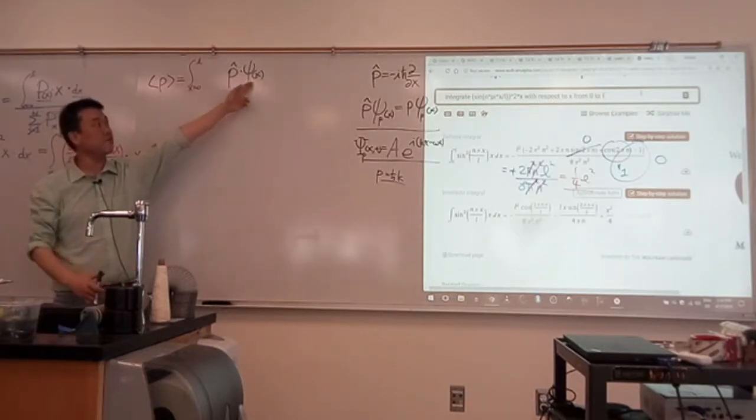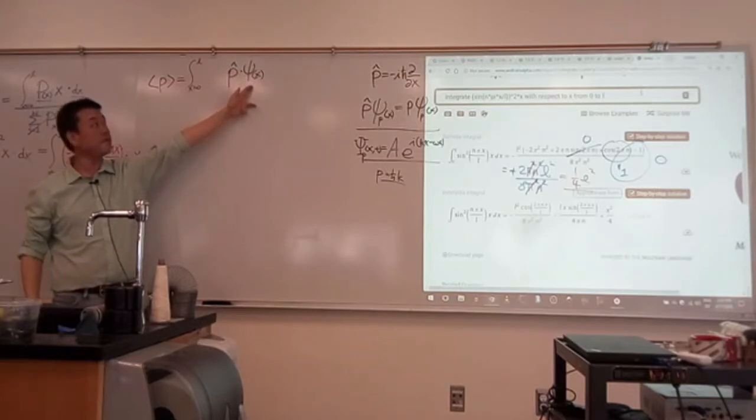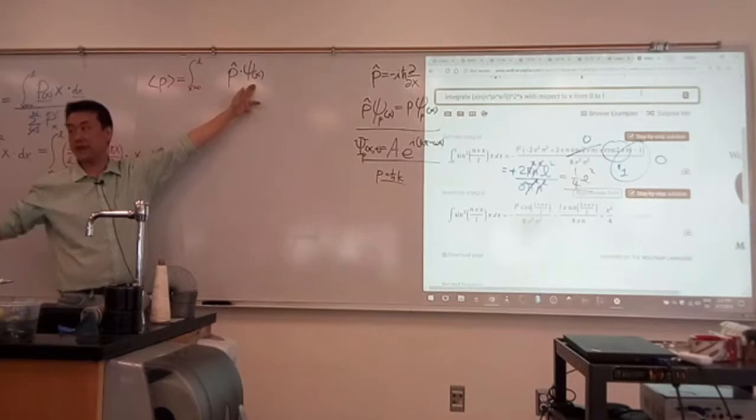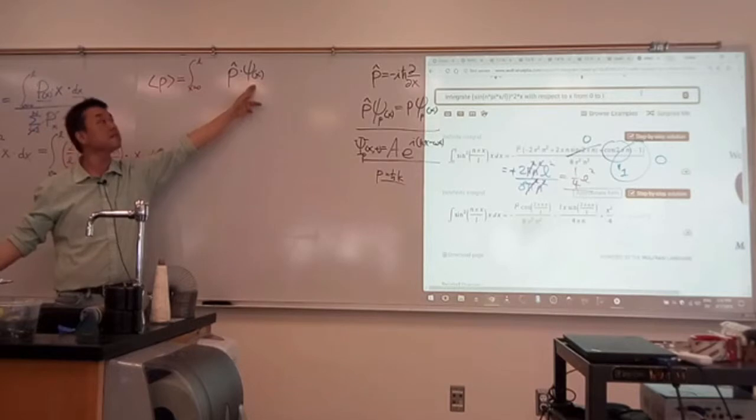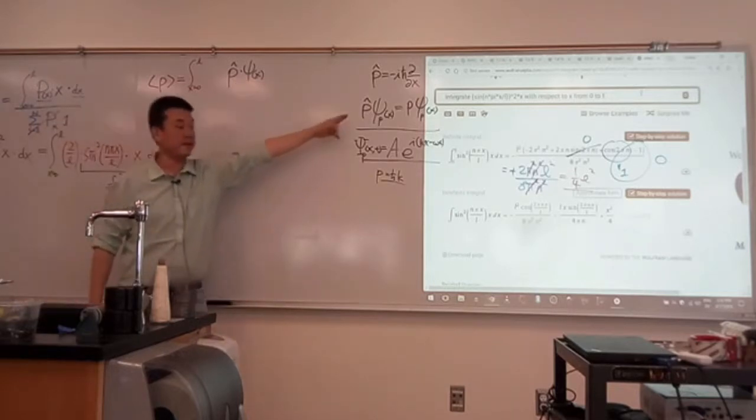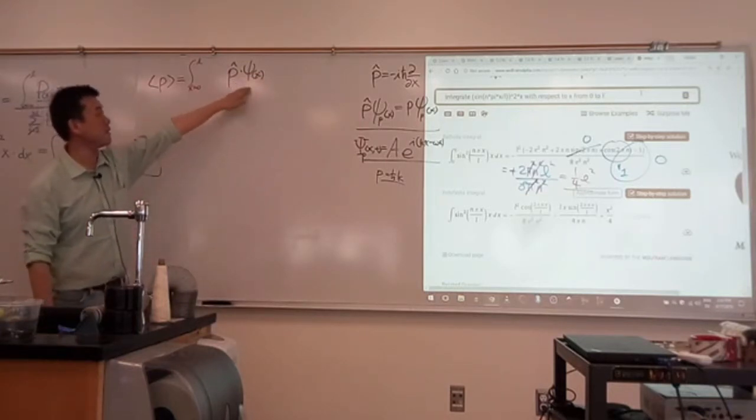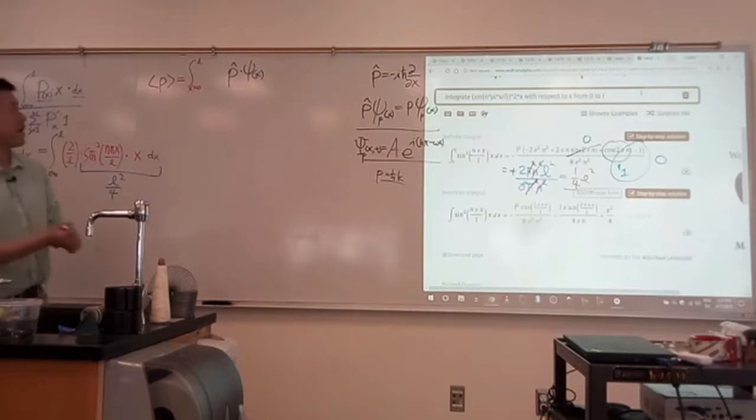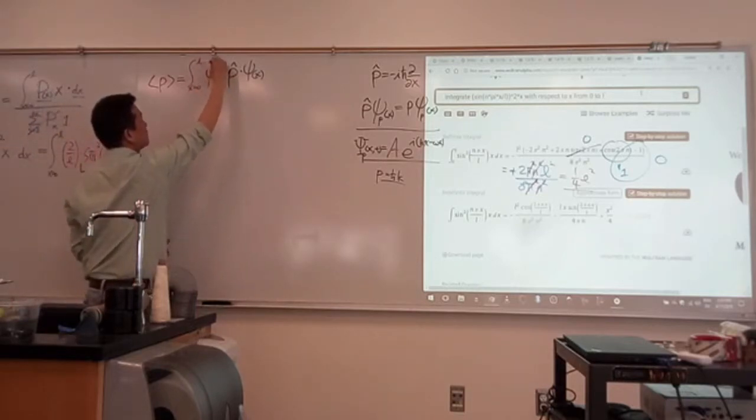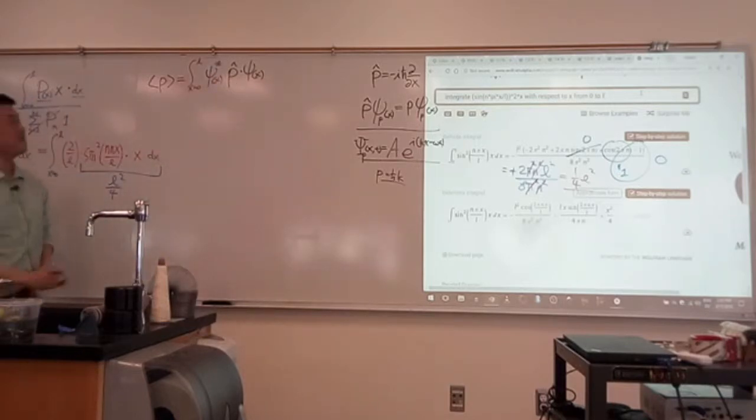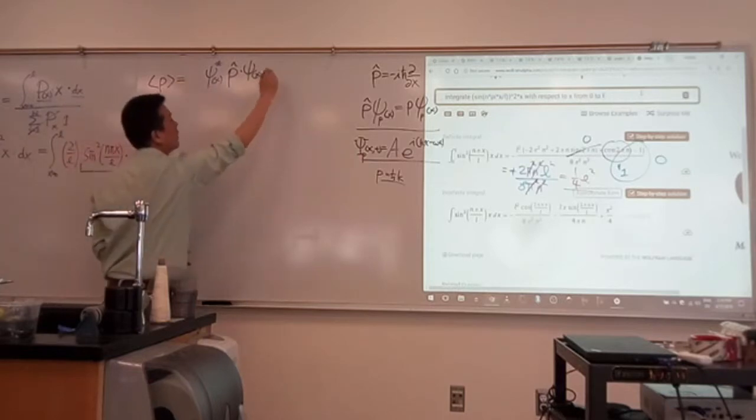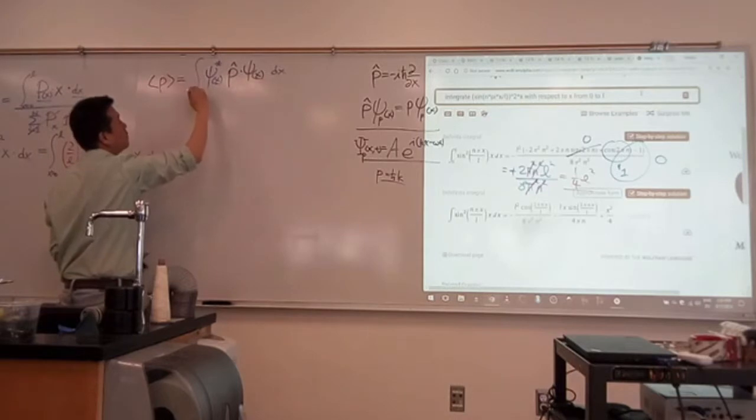And in the case where this is a combination of different momentum eigenvalue states, as in this state is combination of different momentum states, then this one gives you a clean result like this. So to get the expectation value, what you do is take this, multiply it by the complex conjugate of the wave function,